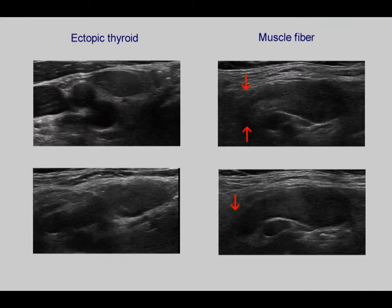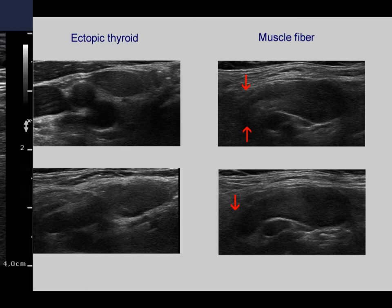Two hypochogenic lesions were found above the right lobe. The left one is a discrete lesion, while the right one is a muscle fiber with a characteristic tail, marked with red arrows.